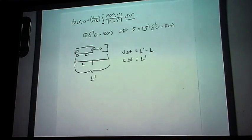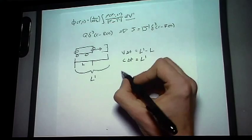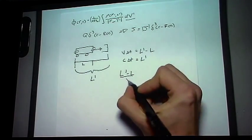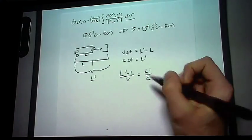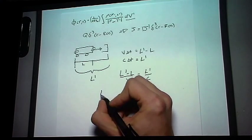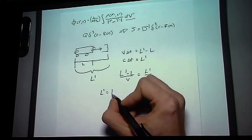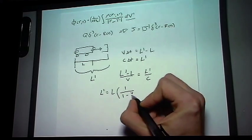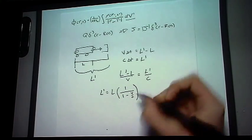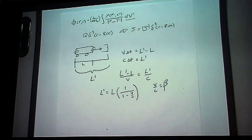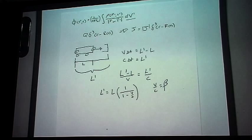We can combine these and we get L prime minus L over V is equal to L prime over C. Or, if we want to isolate L prime, which is what we're trying to do, L prime is equal to L times 1 over 1 minus V over C. I'm going to define V over C is equal to beta, just to avoid having too many fractions within fractions.